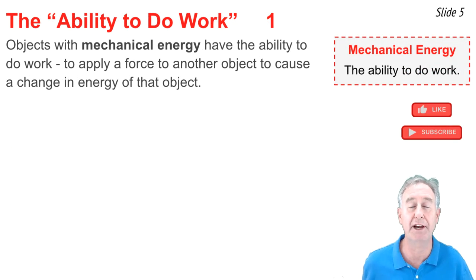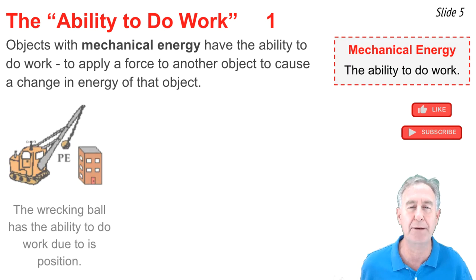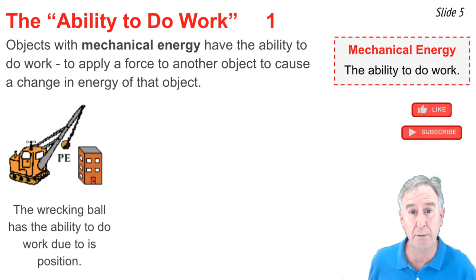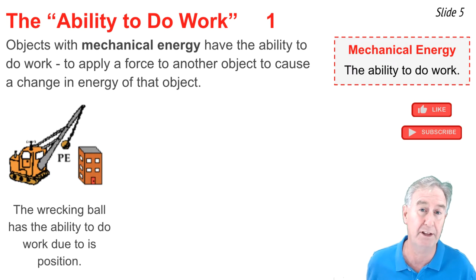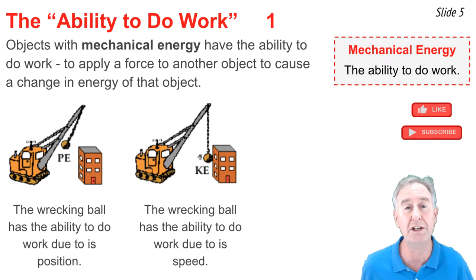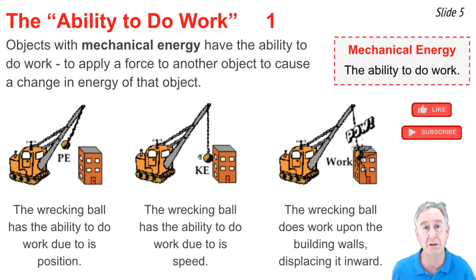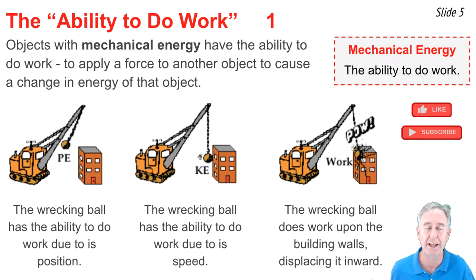Mechanical energy is sometimes defined as the ability to do work. Objects that possess mechanical energy have the ability to apply a force to another object to cause it to be displaced, or to do work upon that object. Consider the wrecking ball of a demolition machine. That wrecking ball is raised high above the ground and possesses gravitational potential energy, giving it the ability to do work. Once released, it swings to its lowest position, losing gravitational potential energy but gaining kinetic energy. Then the wrecking ball hits the side of the building, applying a force to cause it to be displaced inward — doing work upon that building.